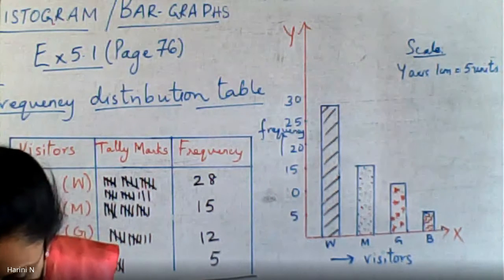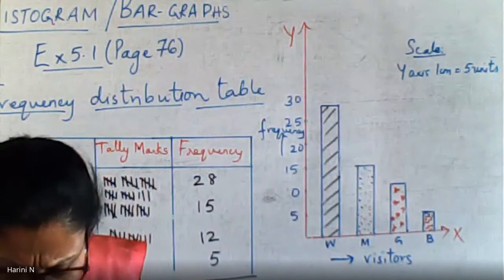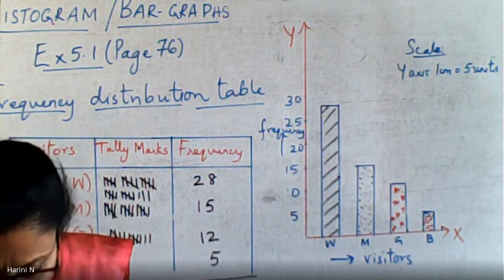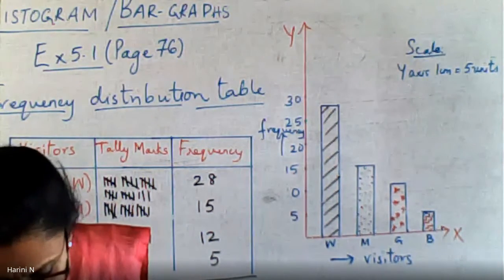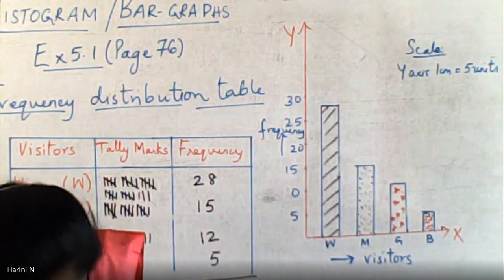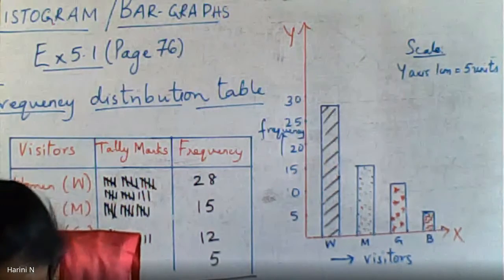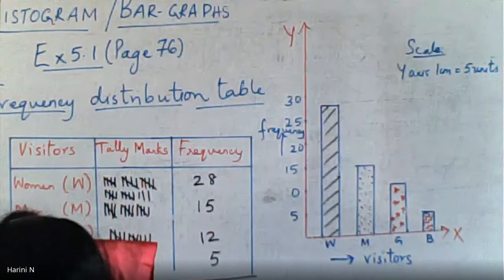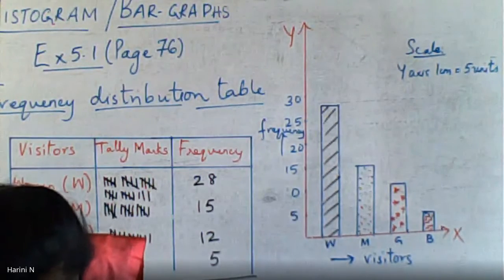A student shares her graph on camera. She has taken a scale of 1 centimeter equal to 2 units — that is also perfectly fine. If you use a different scale, just mark the quantity correctly. Please label the bars clearly: men, women, girl, and boy on the x-axis so they are visible. That's fine — good enough.